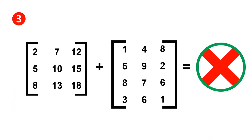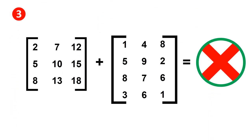For the third application, the first matrix has three rows and three columns while the second matrix has four rows and three columns. Since they are not of the same order, summation cannot occur in this case.